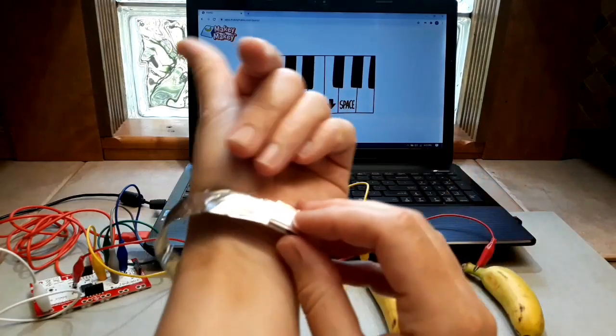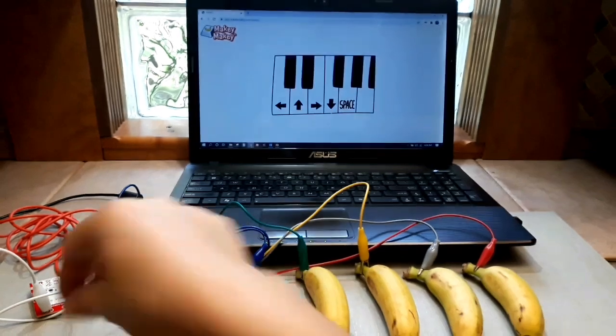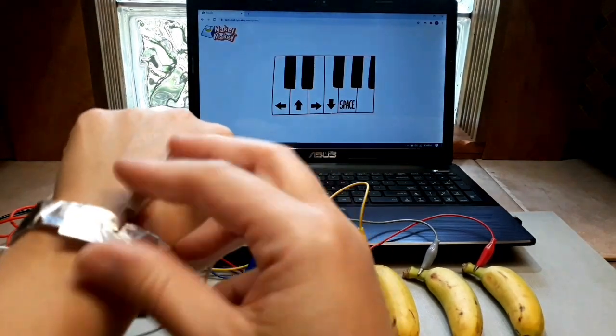One quick tip to making it easier to play and learn with the Makey Makey is to make yourself an aluminum foil bracelet. It allows you to remain connected to earth while using both hands.